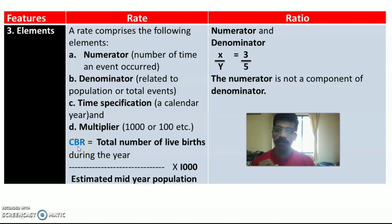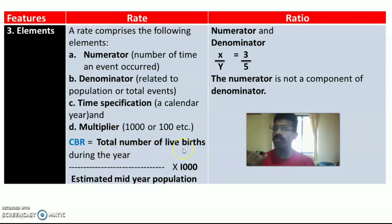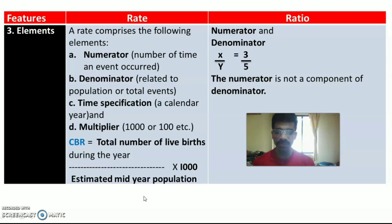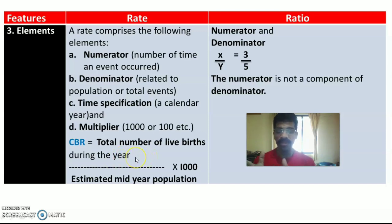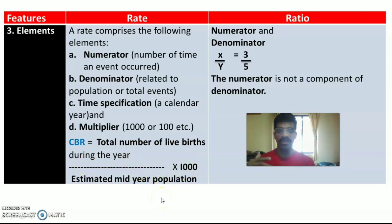For example, crude birth rate. The formula is: total number of live births during the year × 1000, divided by estimated mid-year population. Here, the numerator is total number of live births; the denominator is estimated mid-year population; the time specification is during the year — one calendar year, for example 2023; and the multiplier is 1,000.